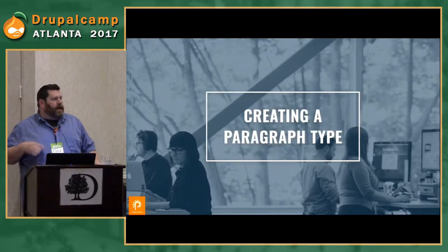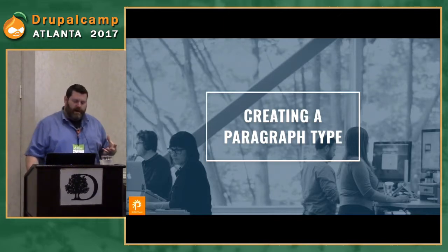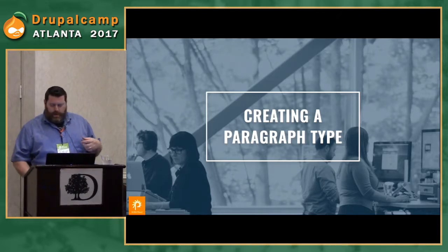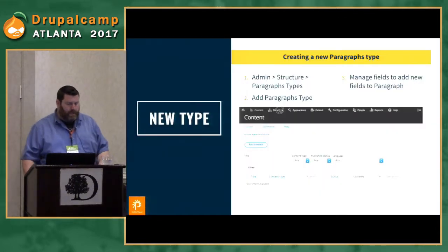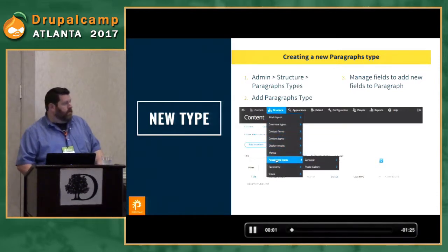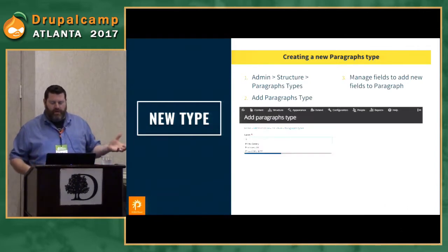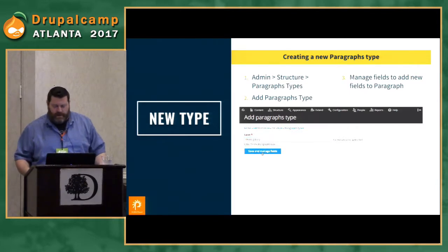So after you've installed the paragraphs module, how do you create a paragraph type? That's what you want to do first thing as soon as you turn on that module. Here I'll show you some of the basic steps in creating a new paragraph type. As you can see in the video, adding fields to a paragraph type is pretty much like adding any other type of entity — because paragraphs are entities. It's like adding fields to a content type, a vocabulary, or a block.